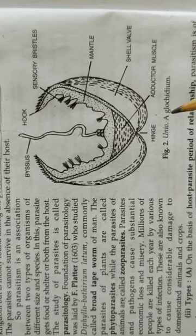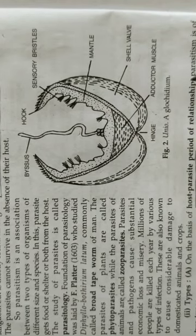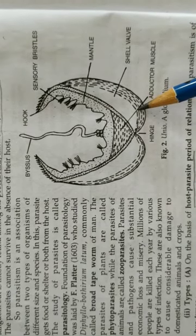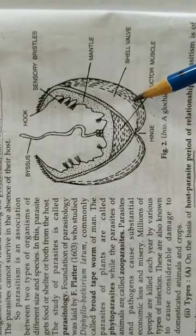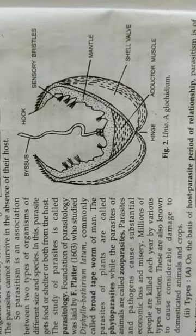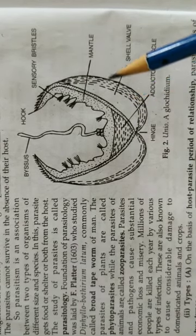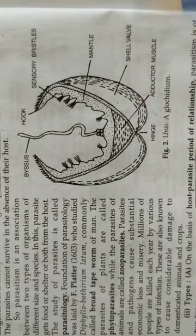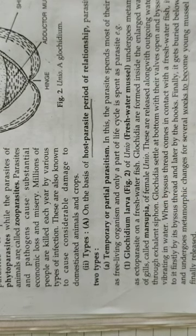This glochidium larva acts as a parasite. It waits for its appropriate host, which is a freshwater fish. When a freshwater fish of the appropriate species comes to it, the larva attaches to the fish, gets buried into the skin of the fish, and undergoes further metamorphosis. After metamorphosis, a small young Unio is released, which sinks down in the water and undergoes further development to ultimately form the adult male or female. This is the life cycle of Unio. The glochidium larva is the phase of the life cycle of Unio that acts as a parasite — otherwise, the entire life cycle of Unio is a free-living state. The glochidium larva is a temporary or partial parasite of a freshwater fish, needing the fish for only a part of its life cycle.